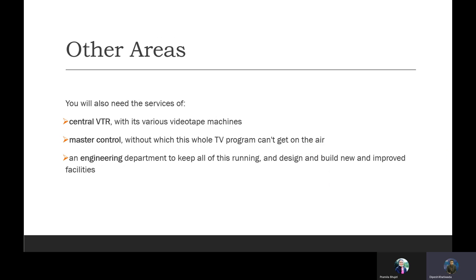Other areas: you also need the services of central VTR — video tape recording — with its various video tape machines. Master control, without which the whole TV program cannot get on the air. An engineering department to keep all of this running and to design and build new improved facilities. The master control room and engineering department keep all equipment running — the department where engineers work for visual and audio.